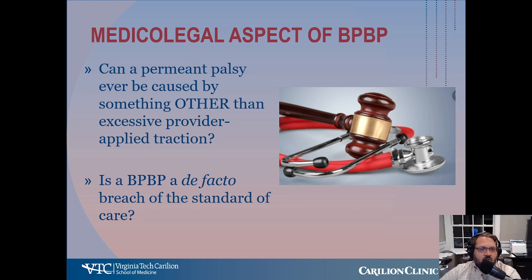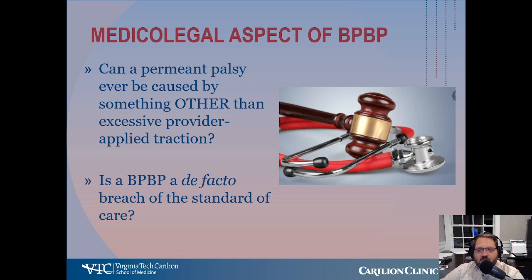Many of these cases end up in litigation. There is a significant medical-legal implication of brachial plexus birth palsies. The central question asked is: can a permanent palsy ever be caused by something other than excessive provider-applied traction? There's a whole body of research on this, including biomechanical studies. The question asked by attorneys is whether a brachial plexus birth palsy is a de facto breach of the standard of care. Taking care of these patients means being involved in litigation, since nearly all of them are involved in litigation.